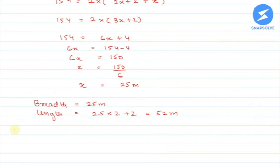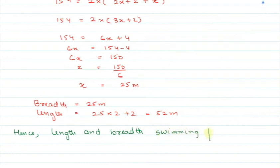So now at last we can write: hence, length and breadth of swimming pool is 52 meters and 25 meters respectively.